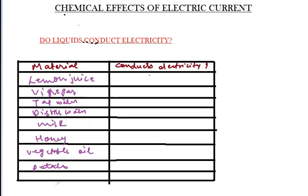Now we have 10 materials and we will see whether they conduct electricity or not. Lemon juice — as seen in the previous example, lemon juice conducts electricity, so it is a good conductor. Vinegar is also a good conductor of electricity because it contains salts. Tap water is also a good conductor of electricity because it contains impurities in the form of salts.